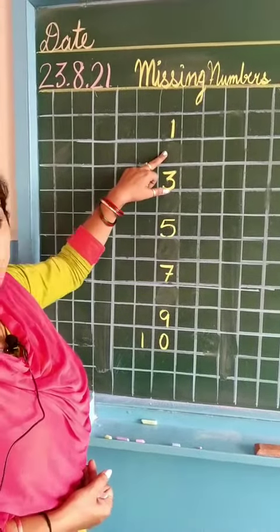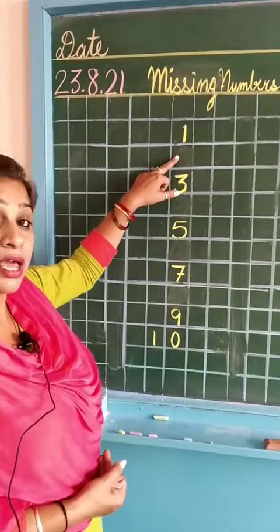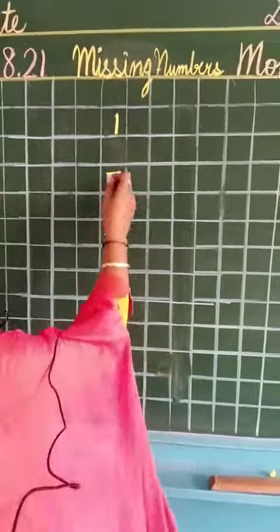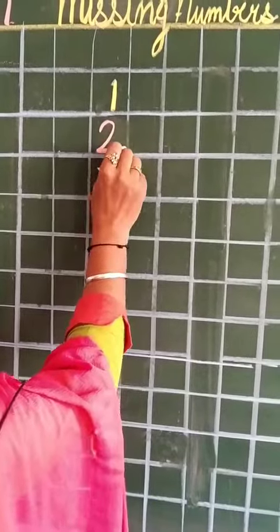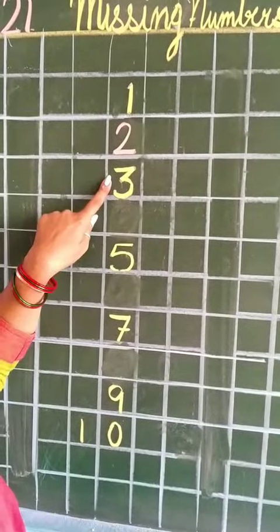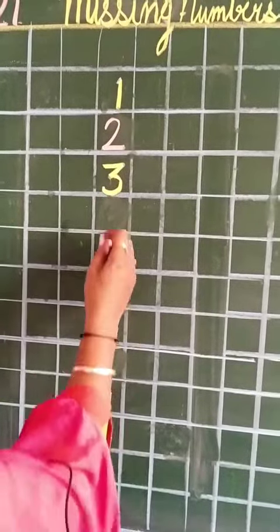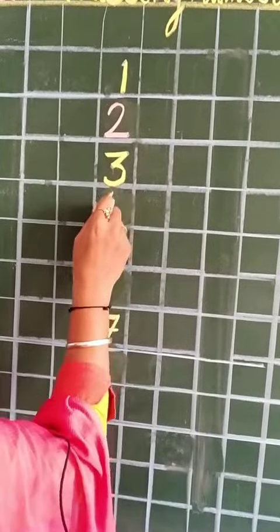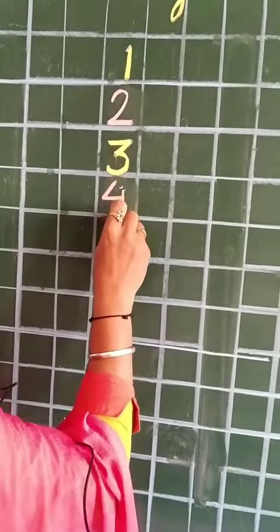Now here the box is empty. What will come after 1? 2, yes. So we will write 2 here. In the next box, 3 is written. So what comes in the next box? 3 ke baad kya aata hai? 4. Very good.